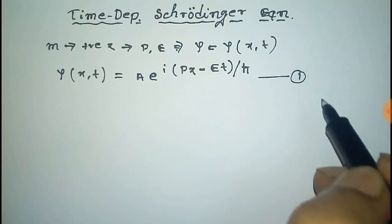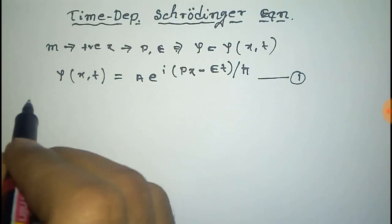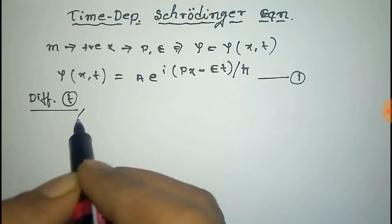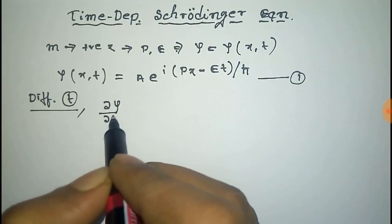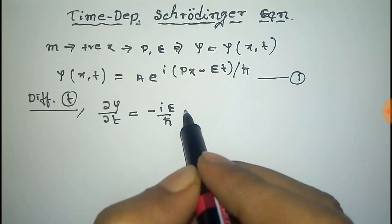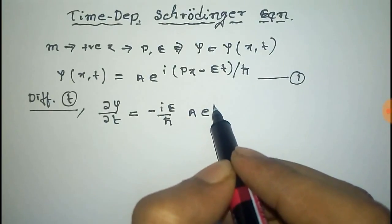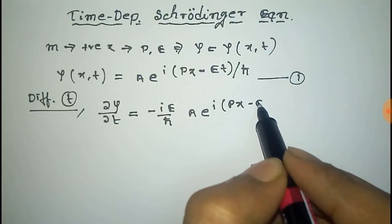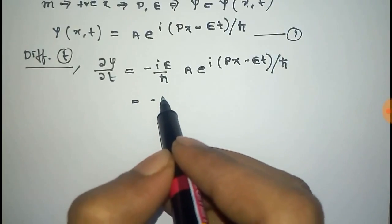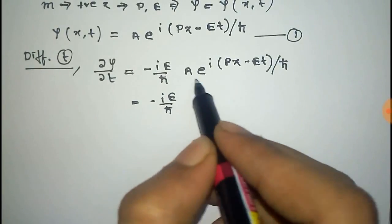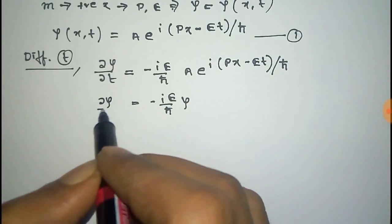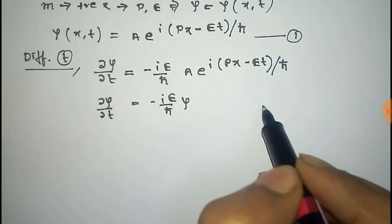Now differentiating equation number one with respect to time partially, what we get is: ∂ψ/∂t = (−iE/ℏ) · A·e^(i(px − Et)/ℏ), which is equal to (−iE/ℏ) · ψ. So differentiating ψ with respect to t gives us that result.